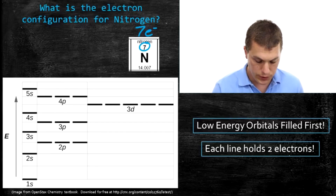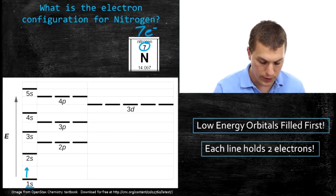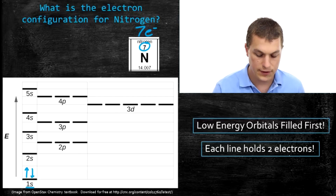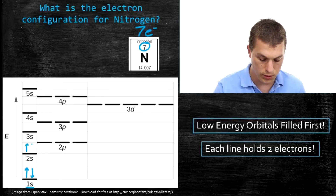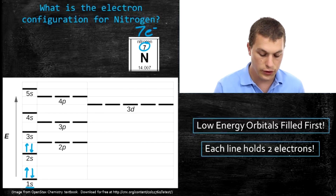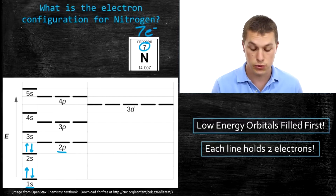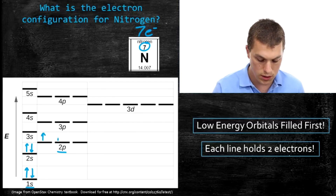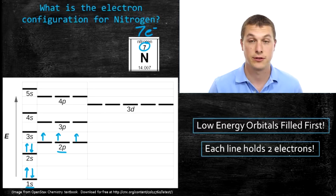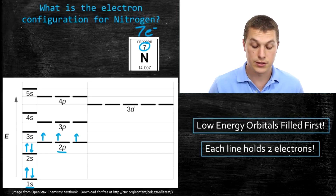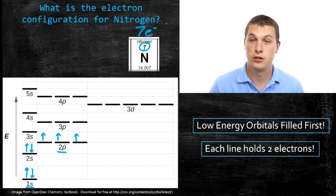We start at the lowest energy and fill those lines with two electrons each, keeping going until we've placed all seven electrons. The very first place we fill is the 1s, because it's the lowest energy — we always fill with up electrons before down electrons. That gives us two electrons. Then we fill the 2s with two more electrons, giving us four total. The next lowest energy is the 2p, and we have three more electrons to place — one, two, three — giving us seven total. Two electrons are in the 1s orbital, two in the 2s orbital, and three in the 2p orbital.